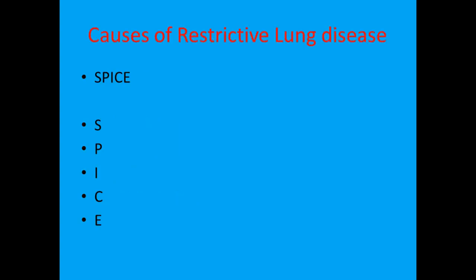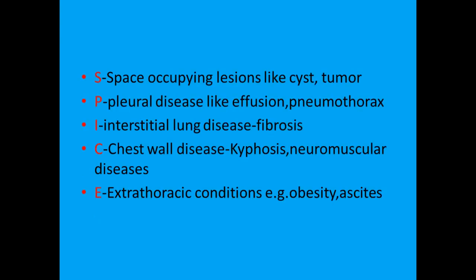Causes of restrictive lung disease — the mnemonic is SPICE, like the spices in our kitchen. S for space-occupying lesions like cyst or tumor, P for pleural disease like effusion or pneumothorax, I for interstitial lung disease for example fibrosis, C for chest wall disease for example kyphosis or neuromuscular disease, and E for extra-thoracic conditions like obesity or ascites.